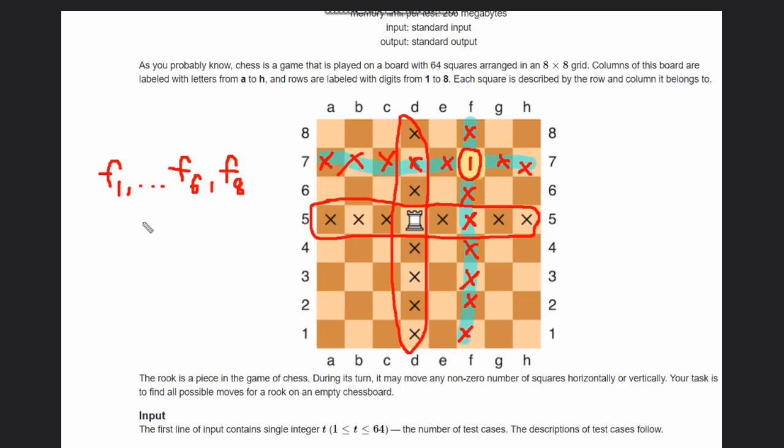Similarly, we have here a7, b7, and so on. And then after e7, as f7 is having the rook, so it is not the possible one on which we can move. So g7 and h7. This is the answer for the blue highlighted portion.